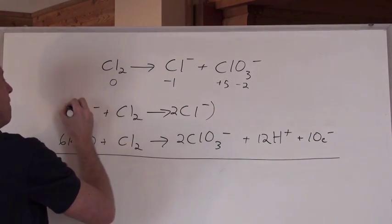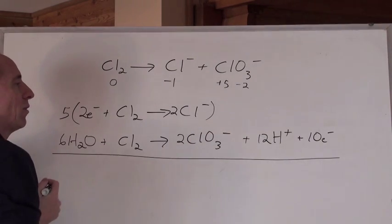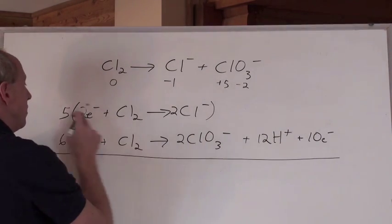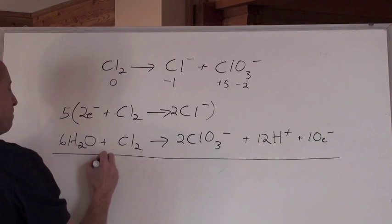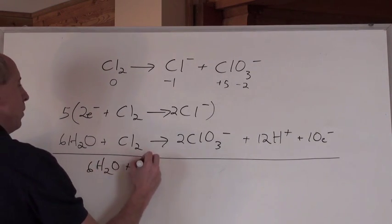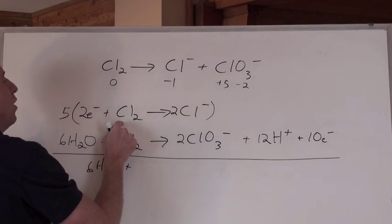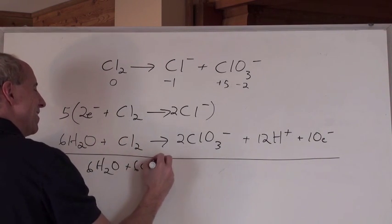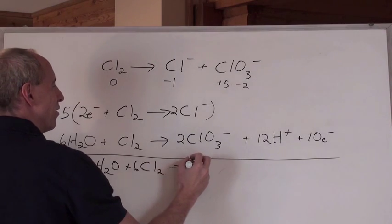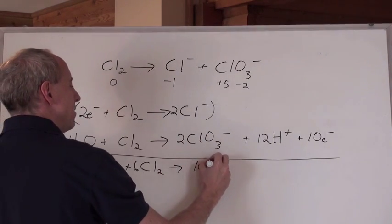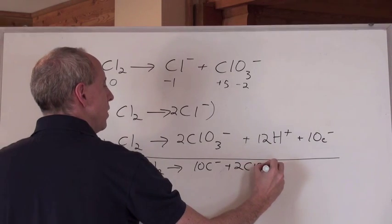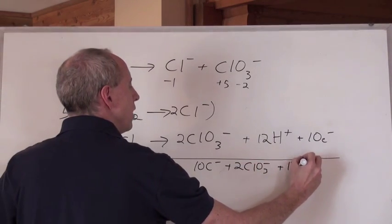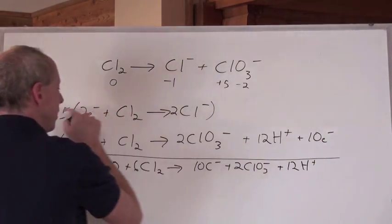Multiply this one by five, right? And then, that one's already got ten electrons there, ten electrons here, and you're going to get six H2O plus five times one plus one is six Cl2. And that's going to then make ten Cl negative plus two ClO3 negative plus twelve H positive. The electrons canceling out.